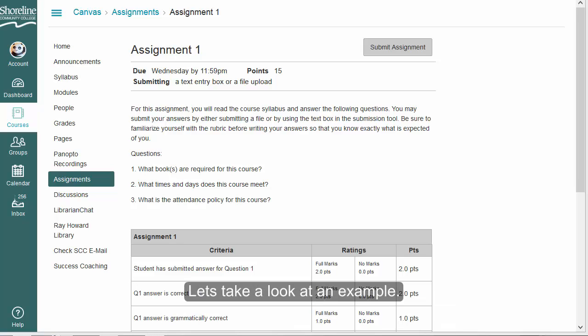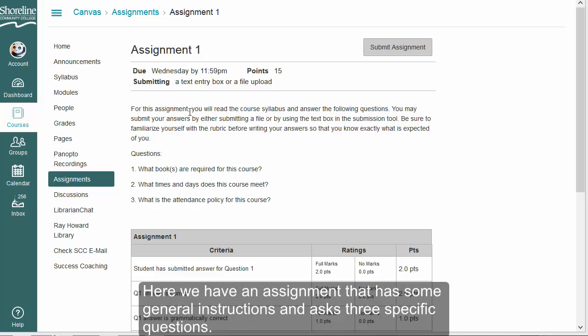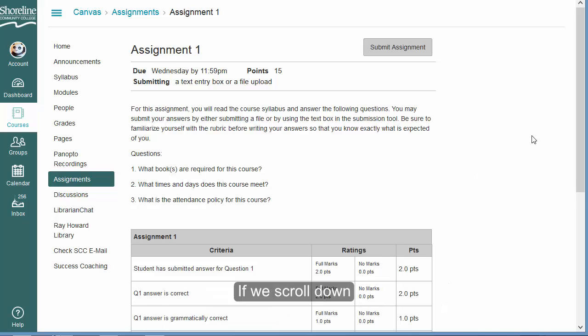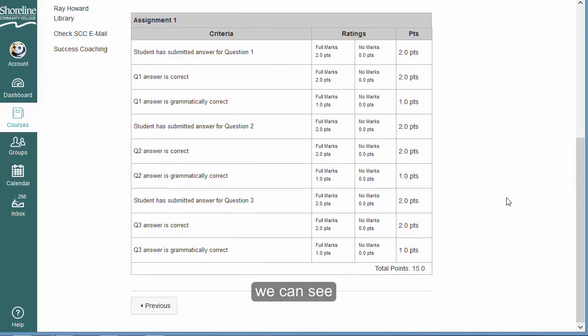Let's take a look at an example. Here we have an assignment that has some general instructions and asks three specific questions. If we scroll down, we can see this is the rubric.